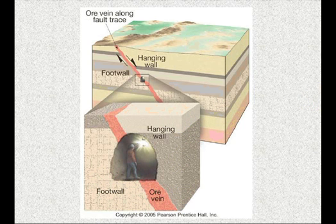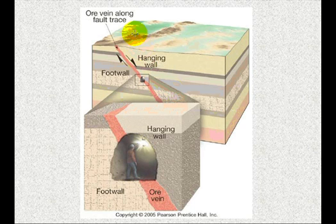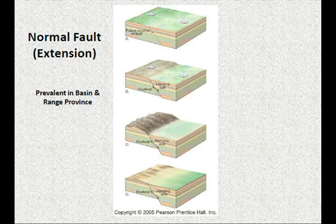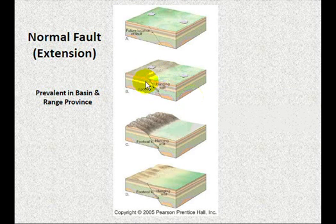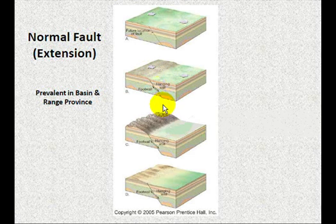Depending on the nature of the stresses being applied — whether things are being pulled apart under tensional stress, extending the system, or compressed together — that gives entirely different types of movement along the fault system. When we have an extensional setting where stress is tensional and you're stretching the area, causing the rock to break along a fault, the hanging wall is going to go down relative to the foot wall.